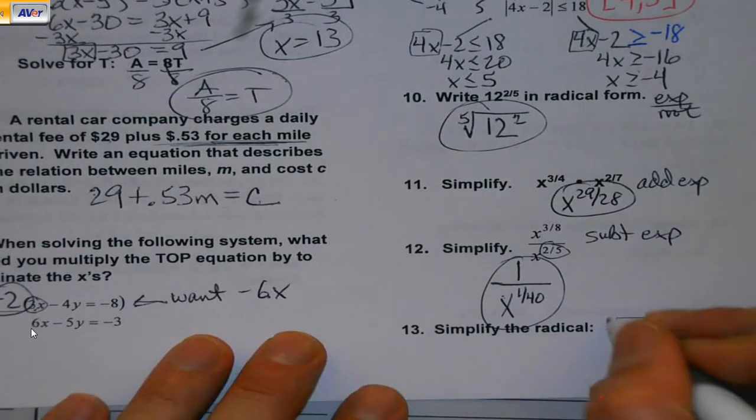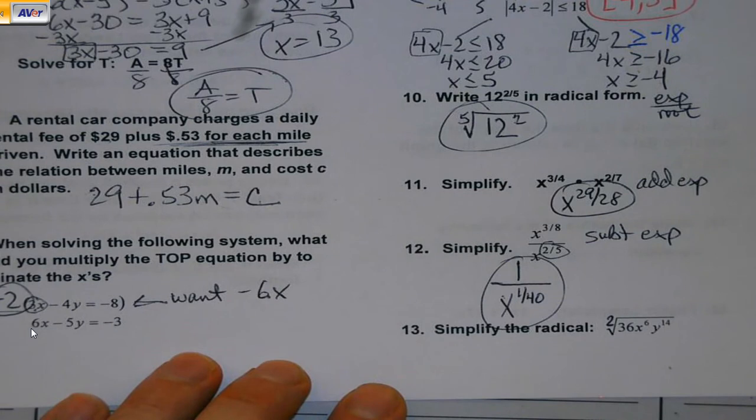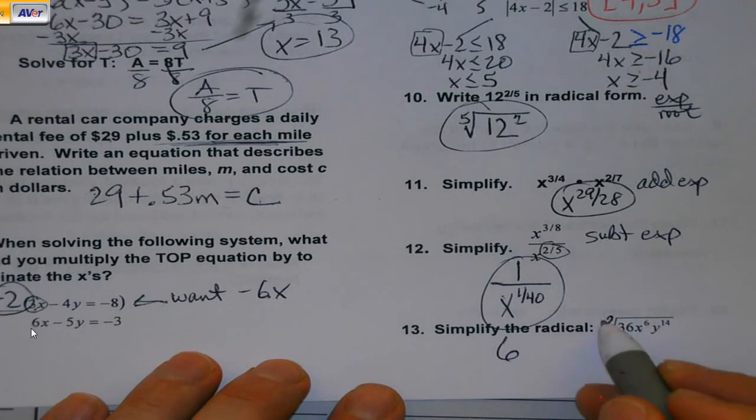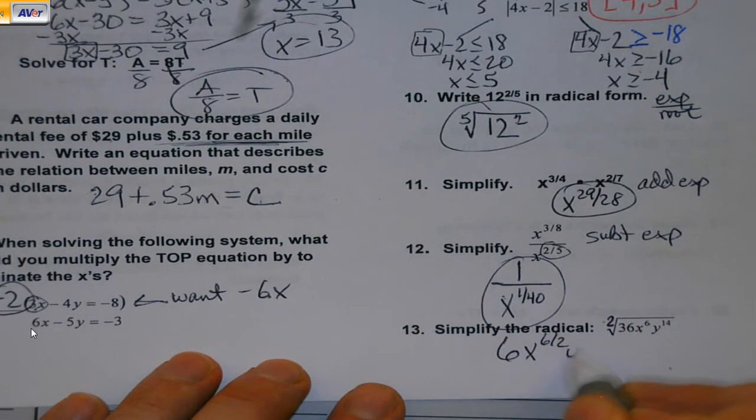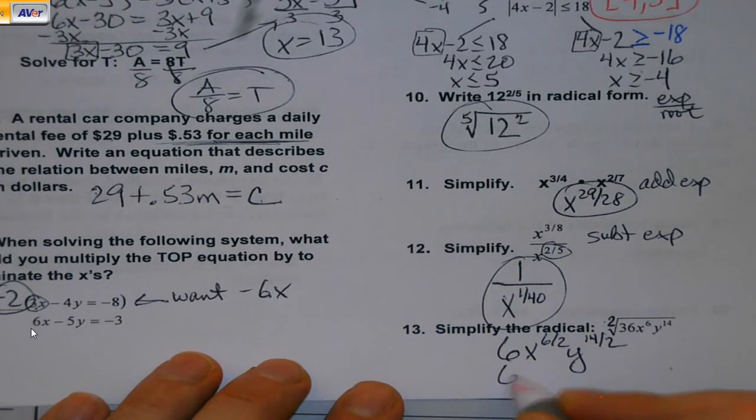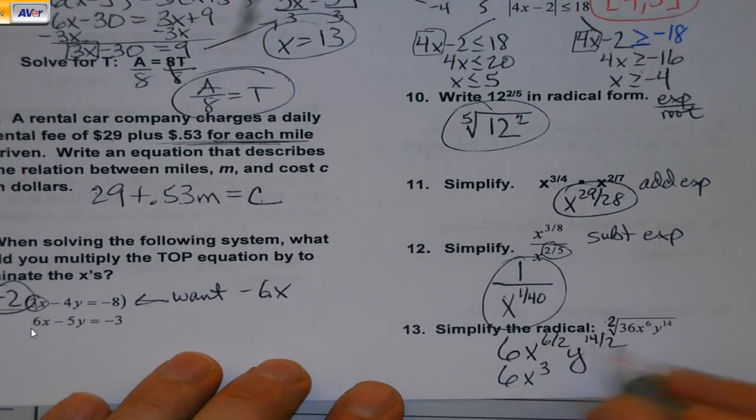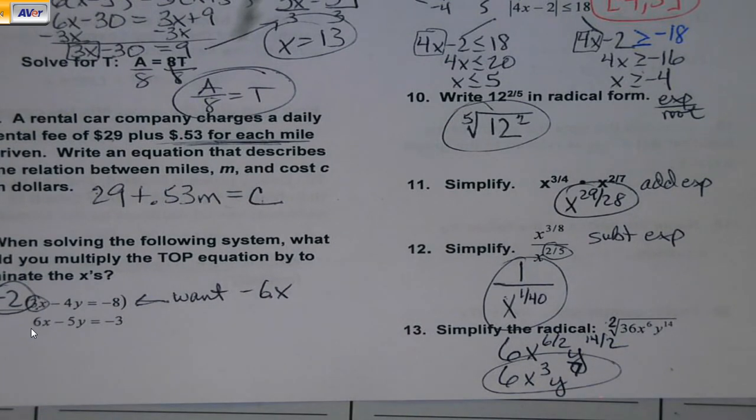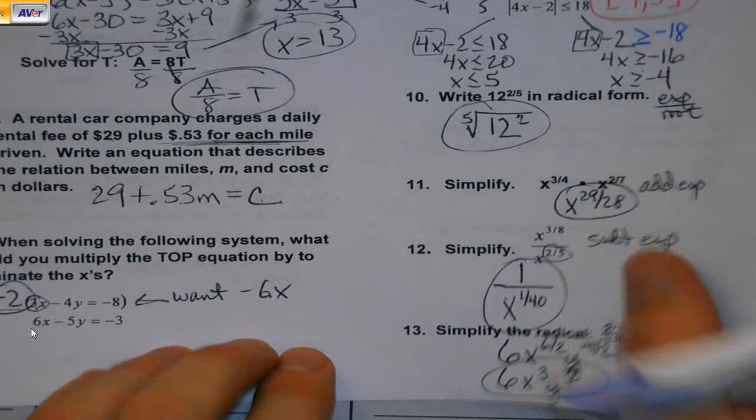Simplify the radical. Remember, there's this little root 2 out here. Square root of 36 is 6. And remember, for exponent rules, it's exponent over root. So I'm just going to write it out here. 6 divided by 2 is 3. 14 divided by 2 is 7. And I'm good. So as we're working through these, the big thing to remember is just take your time. Let the answers guide you sometimes a little bit. Sometimes you can do a multiple choice question without doing all the math work and just by process of elimination, find the answer. So give yourself that opportunity.